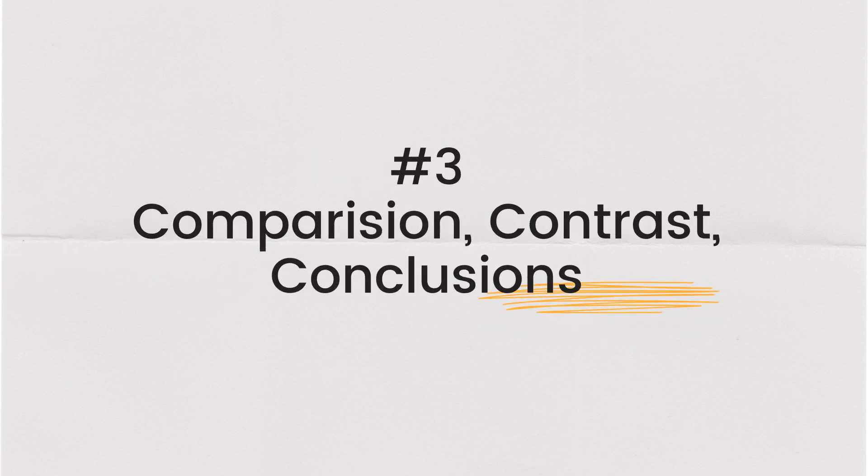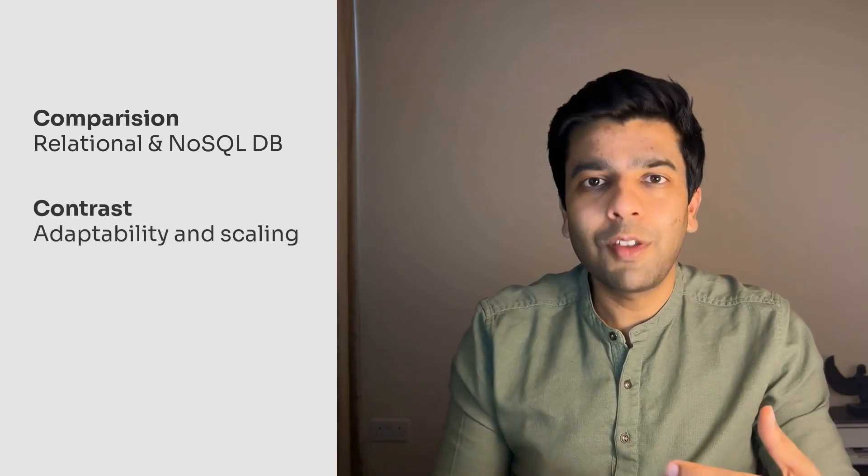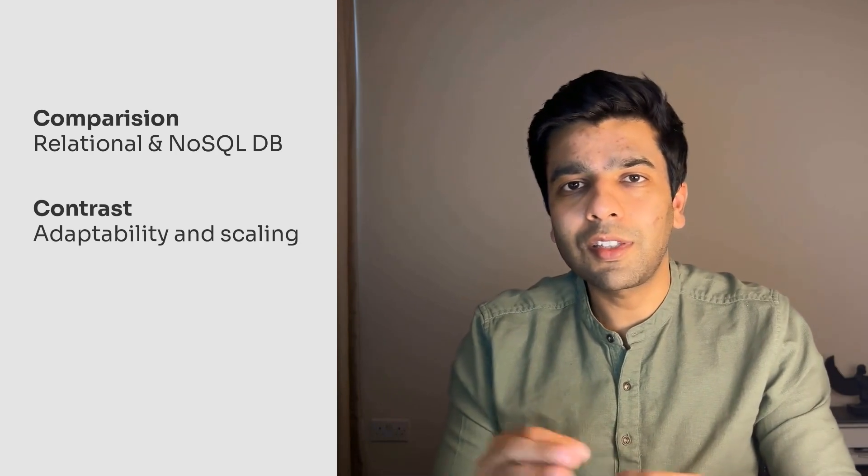The next one is the comparison, contrast, and conclusions approach. This is often what we get when we are doing design decisions. So you start off by the comparison, where you start establishing the two entities being compared. So an example can be comparing a relational database with a modern NoSQL database. Then you go to the contrast, where you dive deep into the differences and similarities between the two entities being compared.